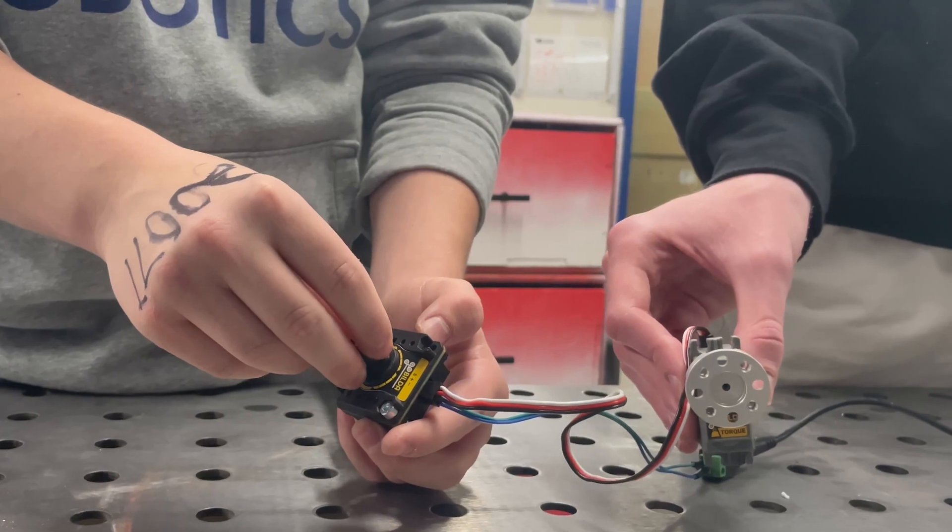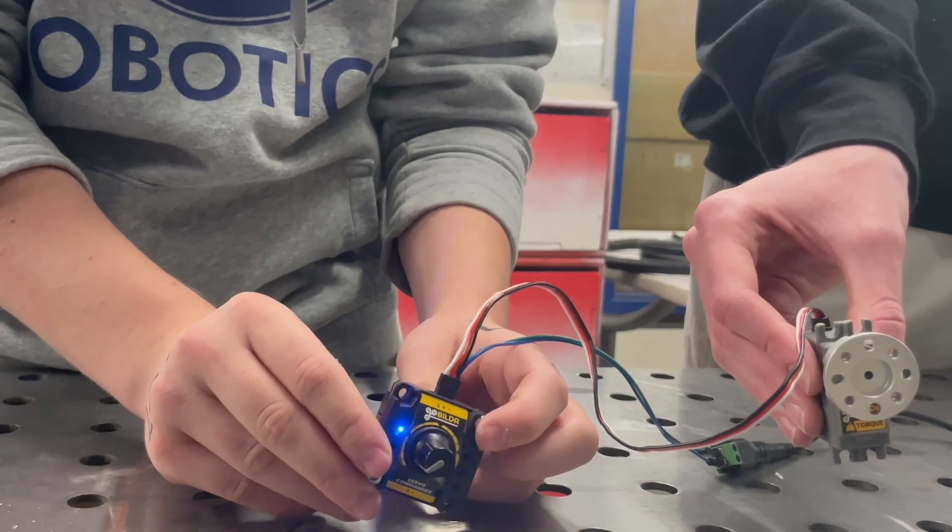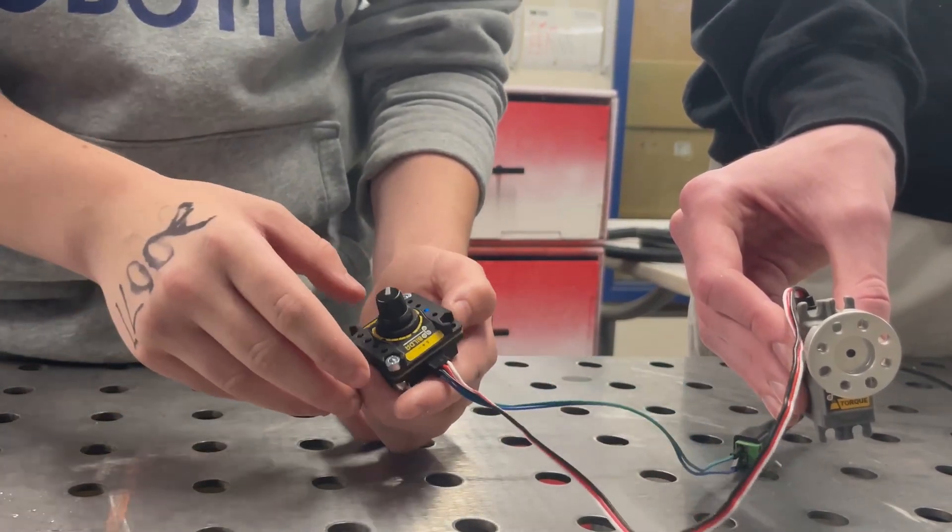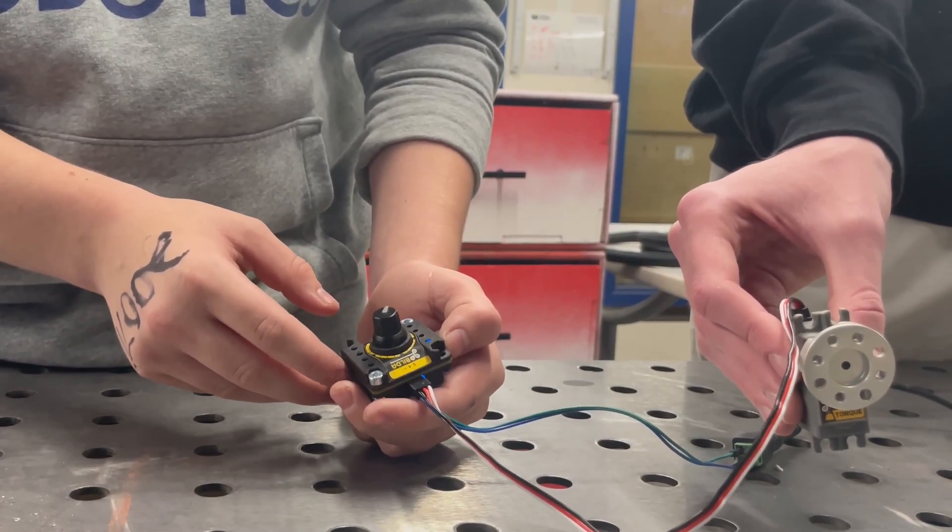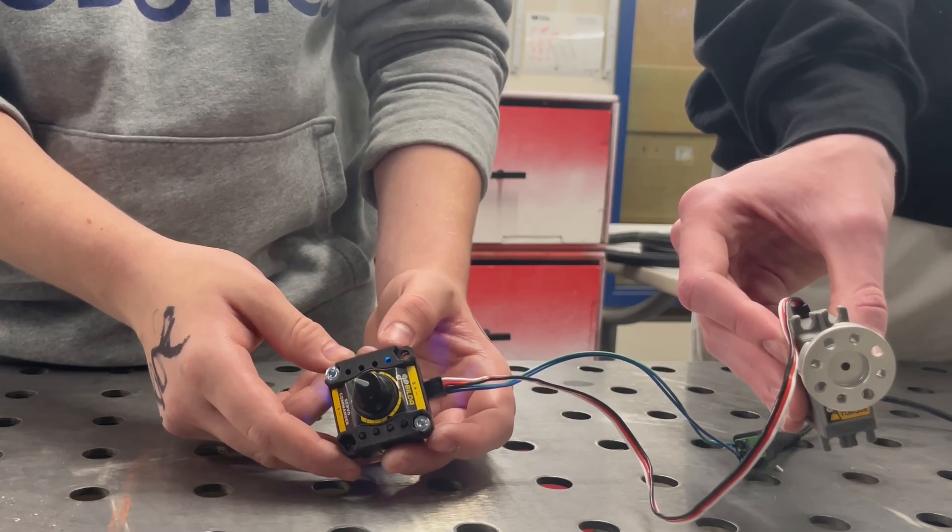When you turn this back to zero or whatever else and press this button, the servo turns to the preset that you set, and I'll turn back. Very useful for prototyping again, lots of opportunities that you can use that for.